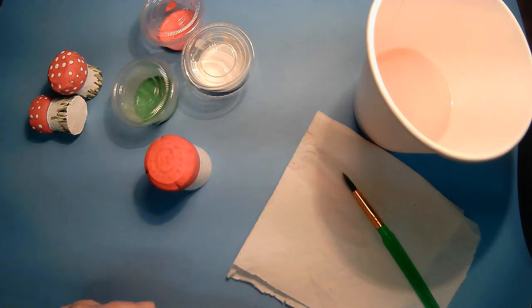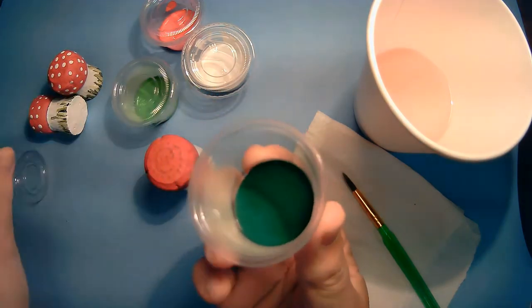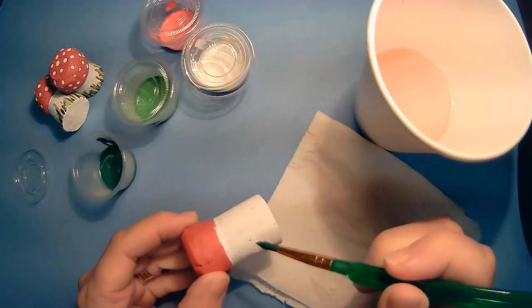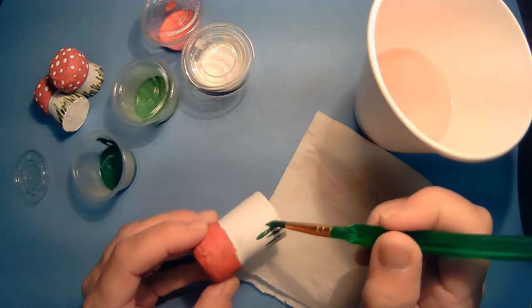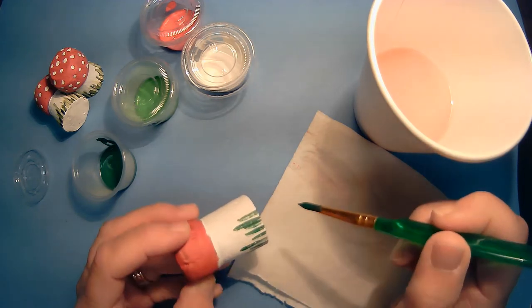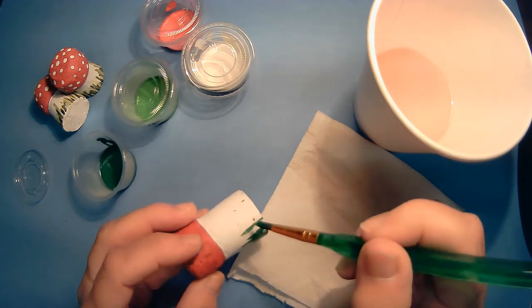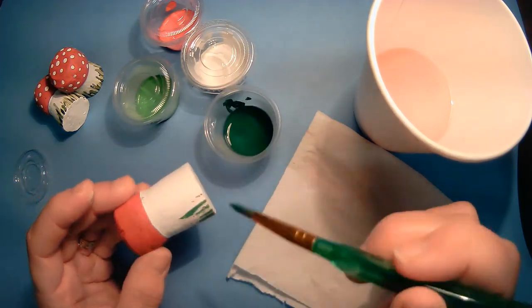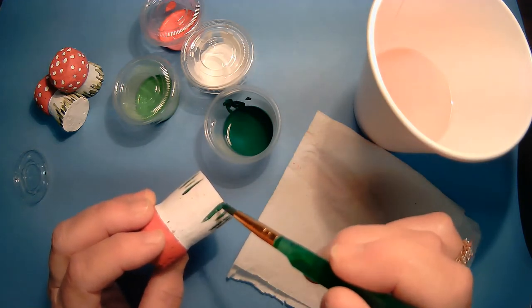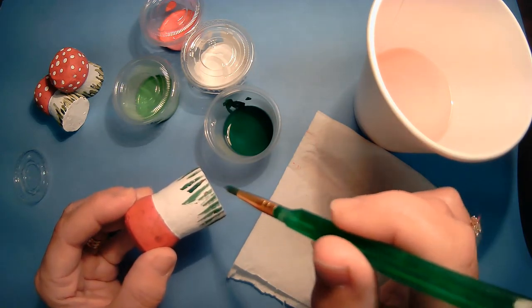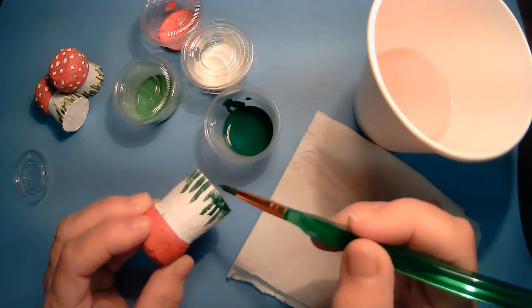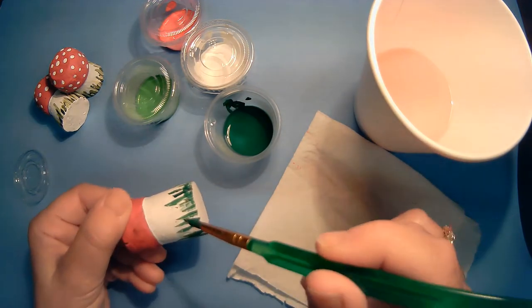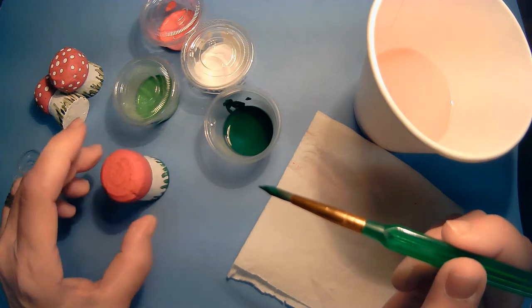Next thing we're going to do is we're going to add the grass at the bottom of our mushroom. I'm going to start with a dark green. And fill the brush. And then just make grass some tall, some short. You just do it the way you like it. Load up the brush if the brush gets dry. And then I'll just cover the bottom a little bit more.